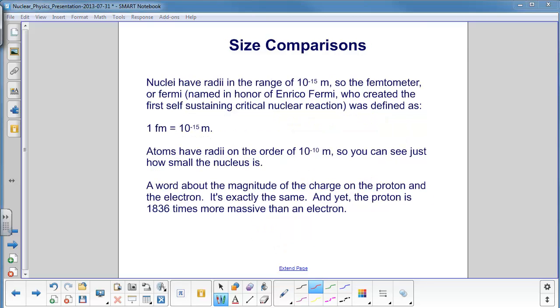Nuclei have radii in the range of 10 to the minus 15th meters. Physicists are always looking to name things after other physicists. When you deal with nuclei, there's a term called the femtometer, which was named in honor of Enrico Fermi. It's also called the Fermi and it's equal to 10 to the minus 15th meters. Enrico Fermi is very famous for constructing the first self-sustaining critical nuclear reaction, and he did it in Chicago.